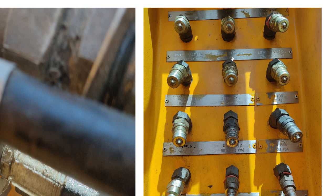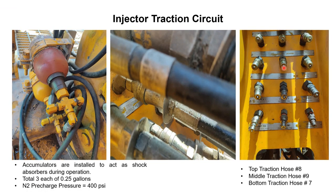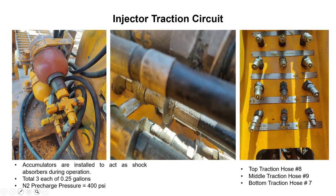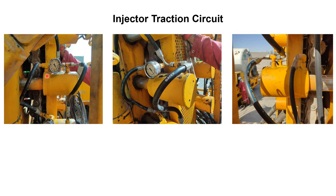We have discussed the middle circuit. At this point, we connect hose number 9. This is the middle traction, so we connect this hose. On the back side, this hose comes to the accumulator and is connected to it. At the accumulator, the flow is divided into two parts. One supply goes to the middle cylinder visible here, and the other supply goes to the second cylinder — the parallel cylinder on the other side — connected on the other side. In this way, the pressure circuit is completed.